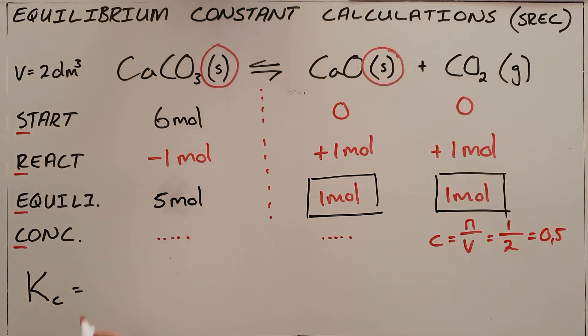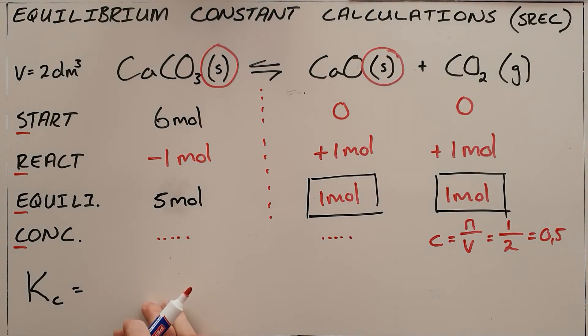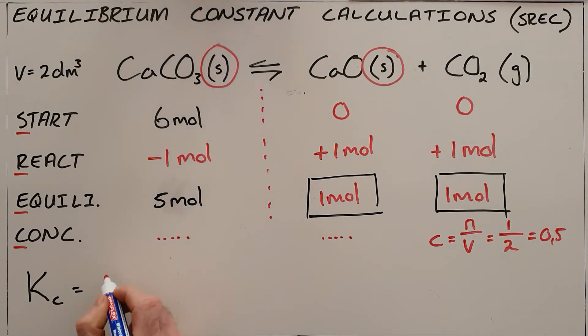And then finally, when calculating our equilibrium constant, it would normally be all of the products over the reactants, but once again, because solids do not have a concentration, the equilibrium constant for this reaction is just equal to the concentration of carbon dioxide, and therefore 0.5.